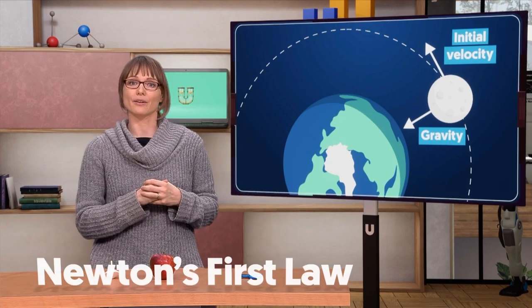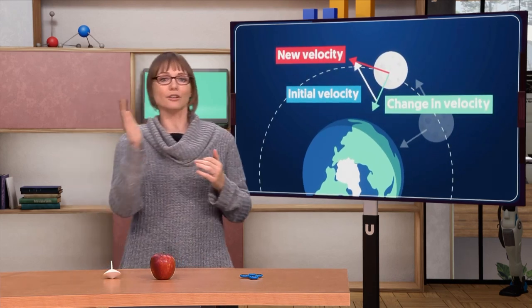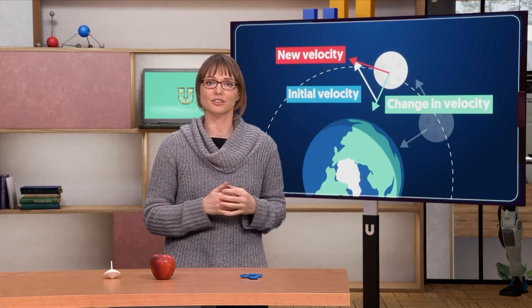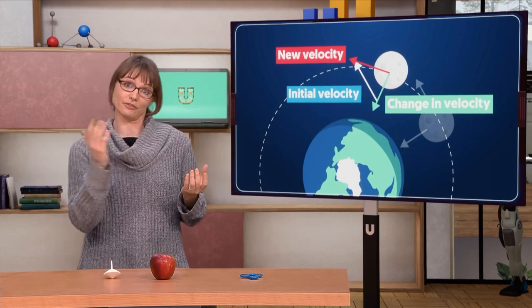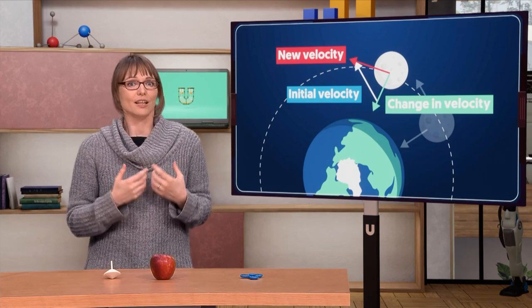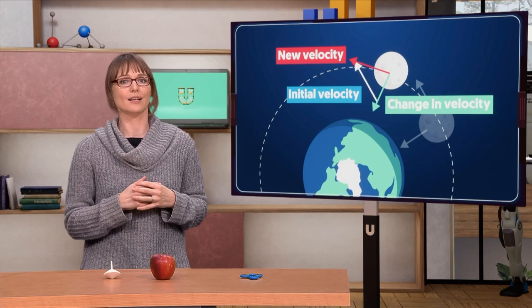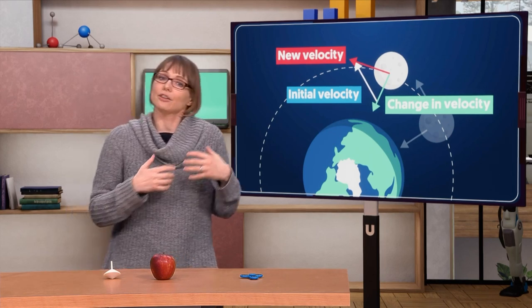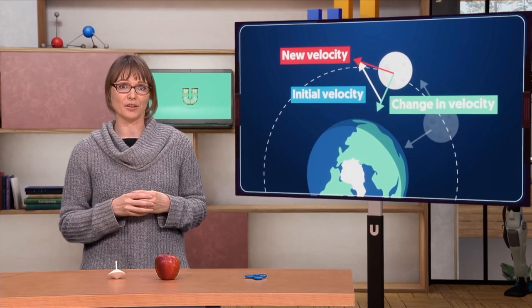We can visualize this with vector addition. You see, the Moon is changing its velocity. So after a little while, the direction of velocity has changed. And this new velocity vector can be seen as the sum of the initial velocity vector plus the change. The change is also a vector and it points in the same direction as gravity. If you have a larger velocity, then also a larger change is required for the same orbit.